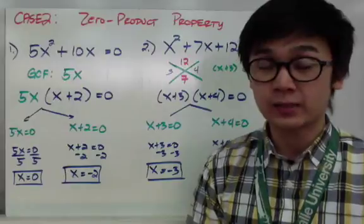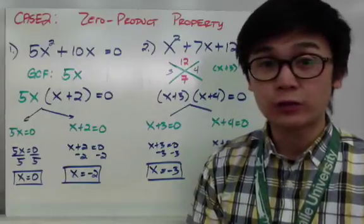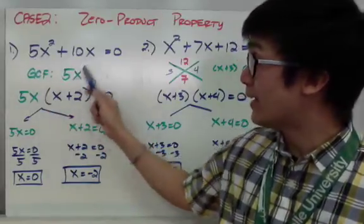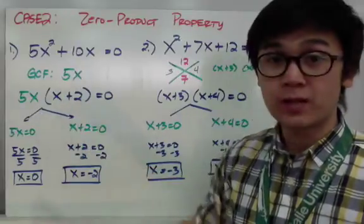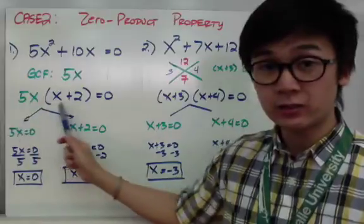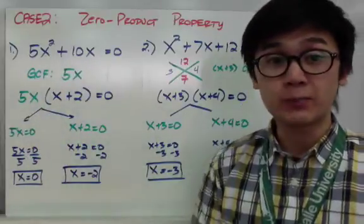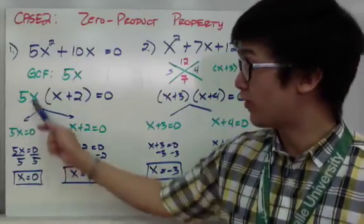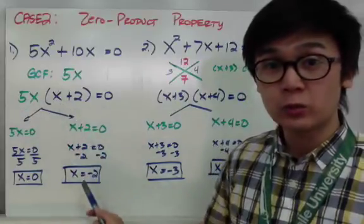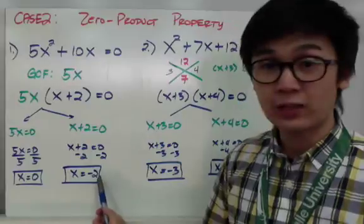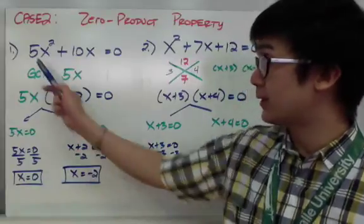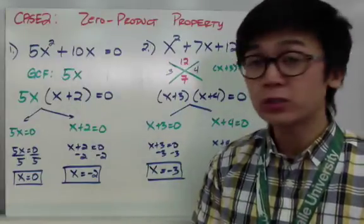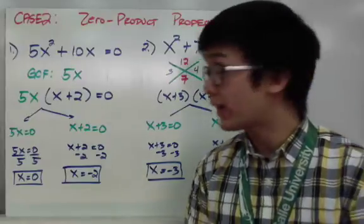For Case 2, example 1: I have 5x squared plus 10x equals 0. Since I can factor using the GCF, I pull out 5x, which is common to both terms, leaving x plus 2 inside the parentheses. Now with two factors, I apply ZPP. My first value is x equals 0, and solving the second factor x plus 2 gives x equals negative 2. I have two values of x because this is a quadratic equation, which can have a maximum of two solutions.